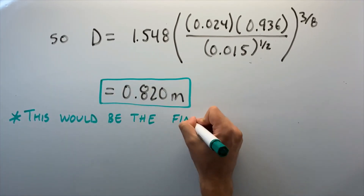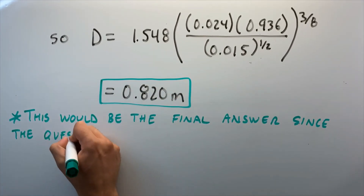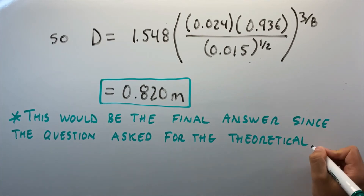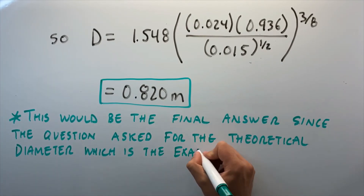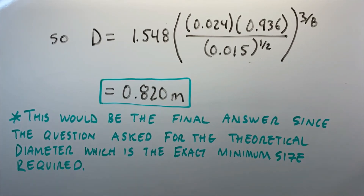This would be the final answer since the question only asked for our theoretical diameter — the exact minimum size required. If we're actually sizing a culvert, we would pick the next larger standard size, so probably a 900 mm diameter culvert.